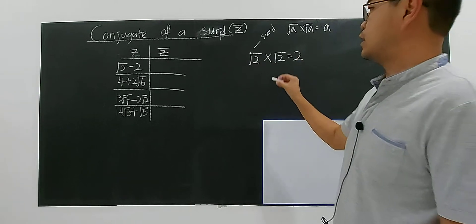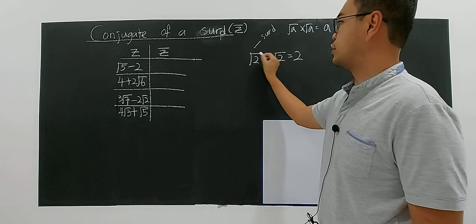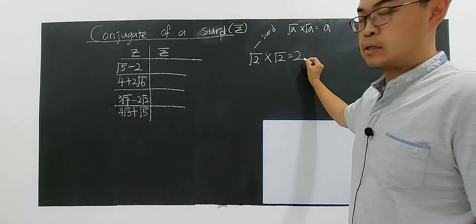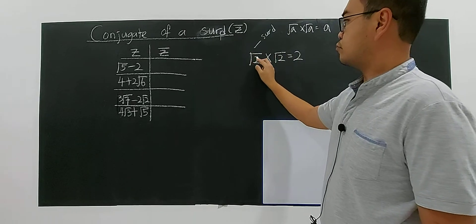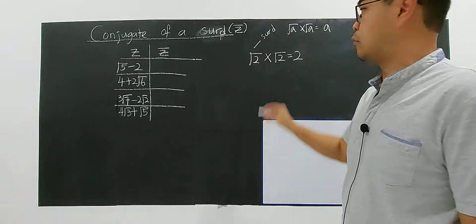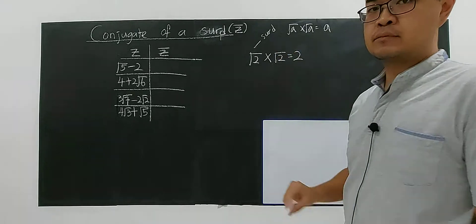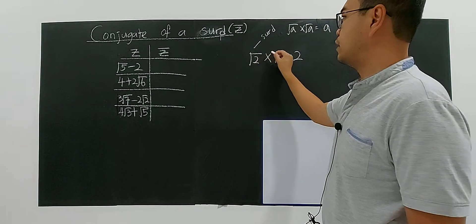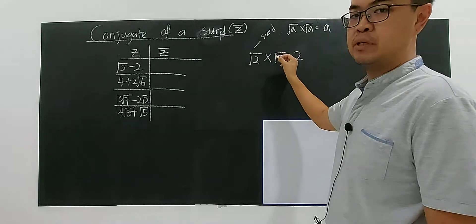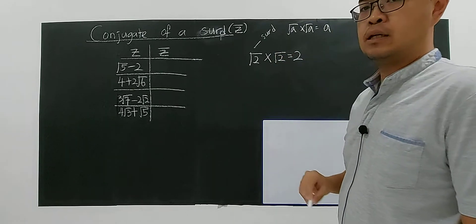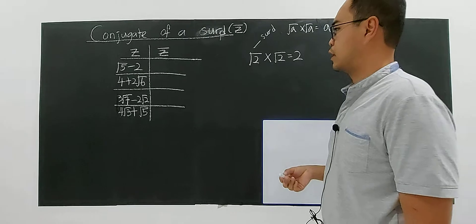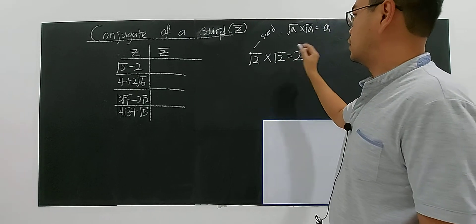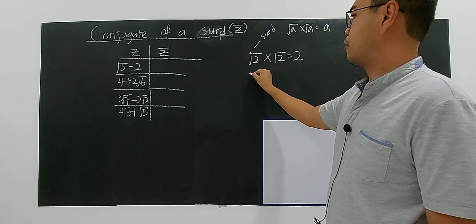So if you want to convert an irrational number, like a surd, into a rational number, you have to multiply it by another surd. Just like complex numbers — if you have an imaginary number and you multiply it by another imaginary number, you will produce a real number. So for this case, this becomes a rational number.